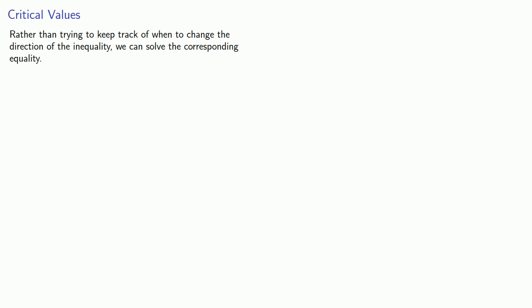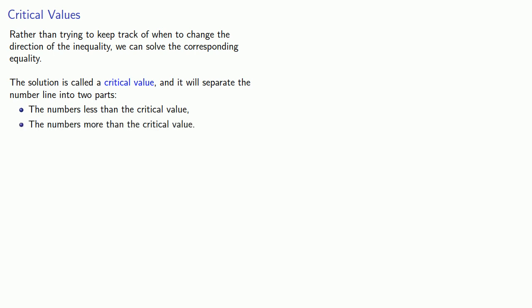The solution is called a critical value, and it will separate the number line into two parts. The number is less than the critical value, and the number is more than the critical value. We can then use a test point in each interval to decide whether to include it. It's also important to remember that we also need to test the critical value itself to decide whether to include it.